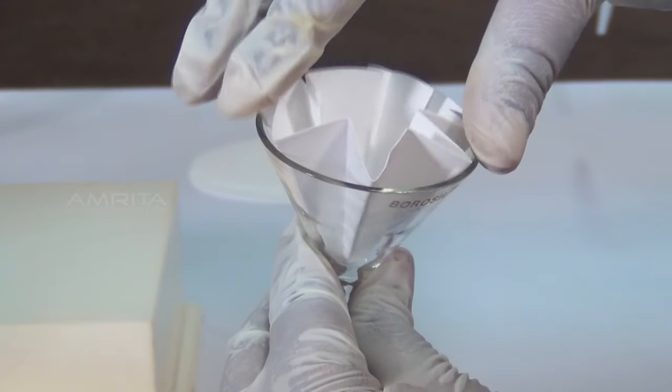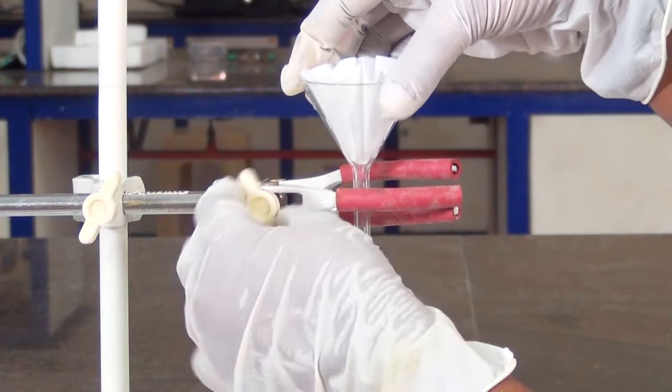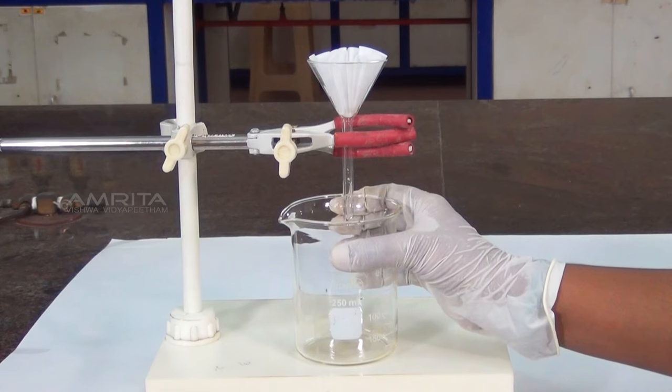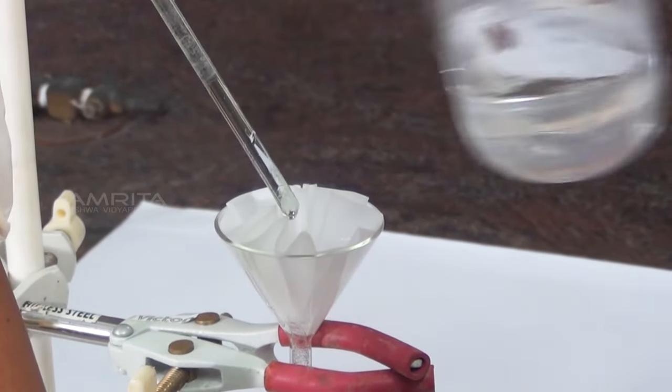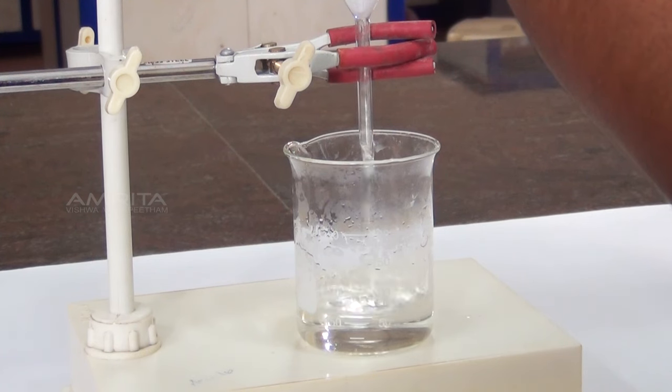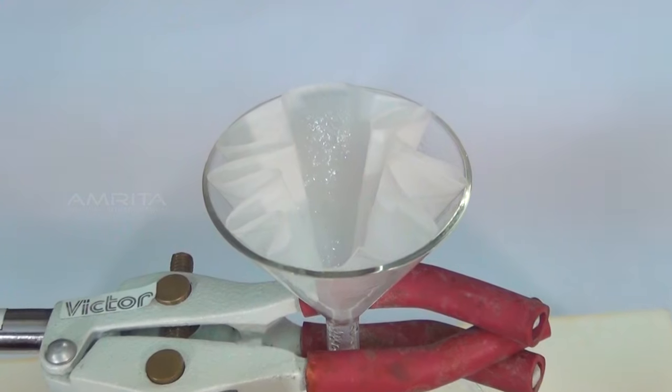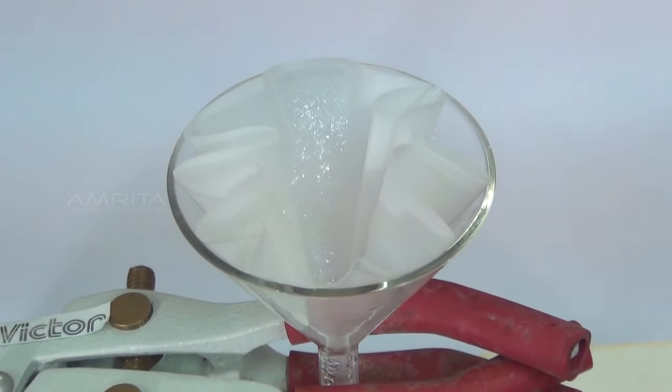Place a fluted filter paper in the funnel and clamp the funnel to the stand. Place a beaker under the funnel. Pour the solution into the funnel over the glass rod and collect the filtrate in the beaker. The insoluble impurities are left on the filter paper.